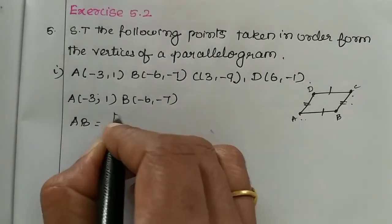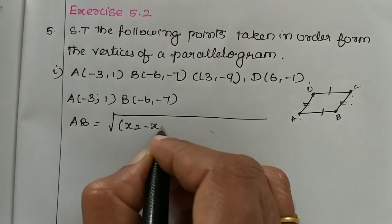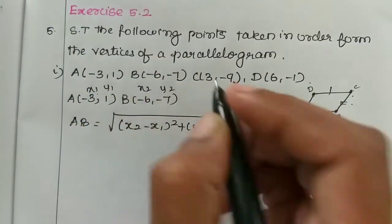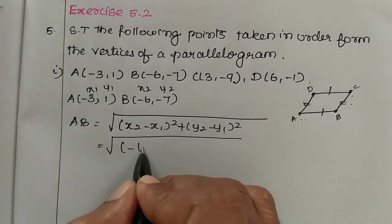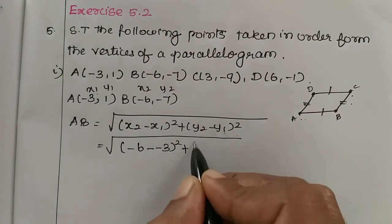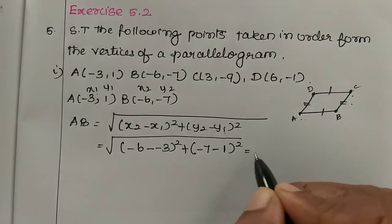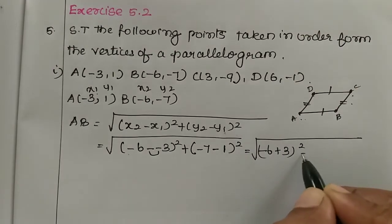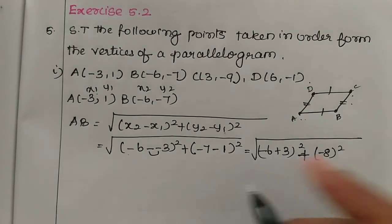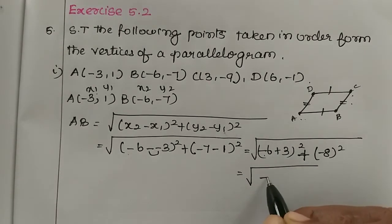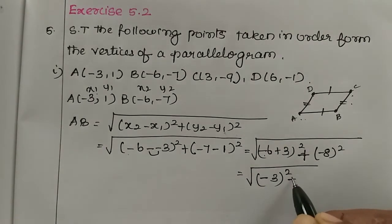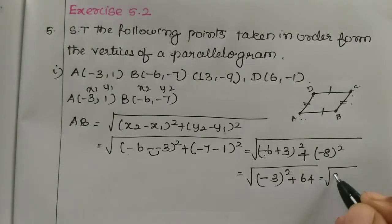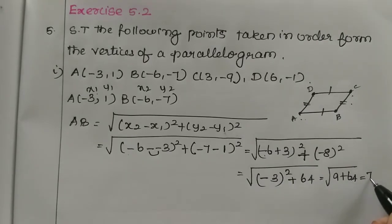Using the distance formula: root of (x2 minus x1) squared plus (y2 minus y1) squared. For AB, x2 is minus 6 minus x1 is minus 3, whole square, plus y2 is minus 7 minus y1 is 1, whole square. Which equals 3 squared plus 8 squared, that is 9 plus 64, so root 73.